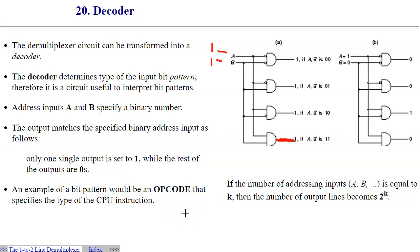And so that decoder is a very important part. The last thing to note is that if the number of addressing inputs right here is equal to k, then the number of output lines becomes 2 raised to the kth power, so the same correlation as we observed in other circuitry.